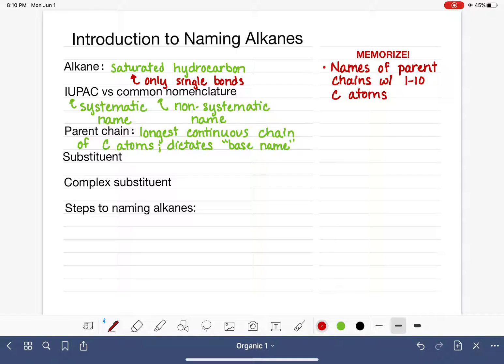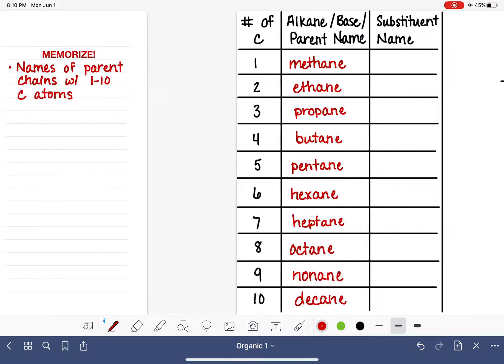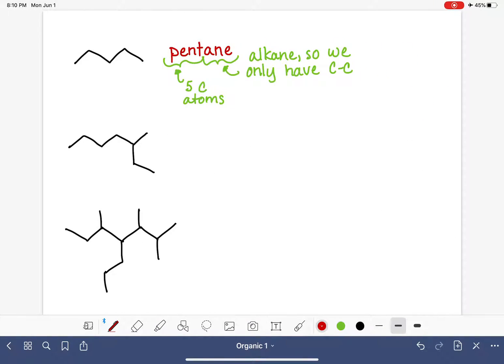Anything more than 10 carbon atoms we don't see very often. So now for the next example that we have on this page, this one's going to be a little different because notice in this molecule we have this point, this carbon atom, where the molecule branches, where it divides and heads in two different directions.